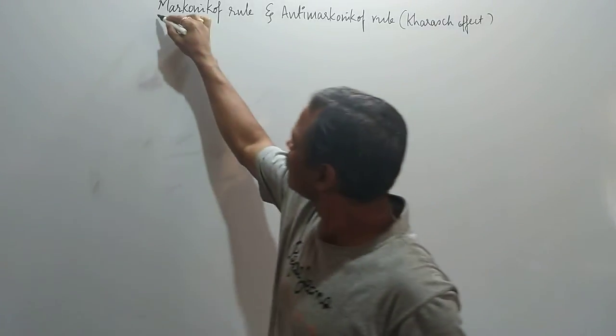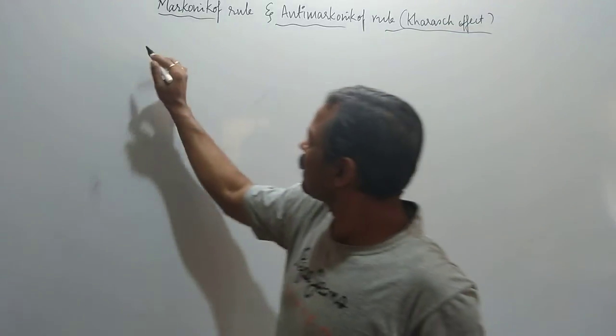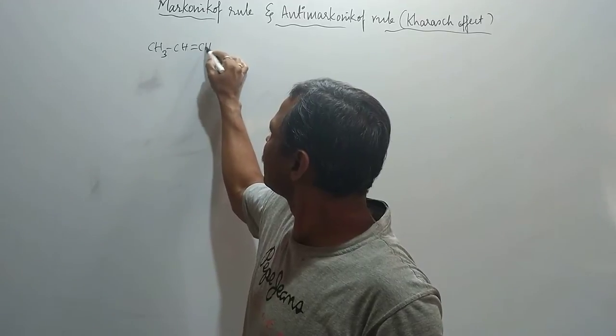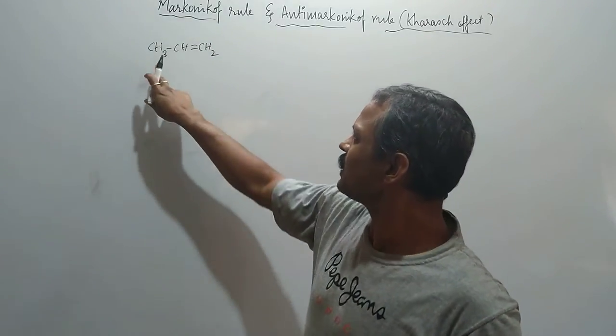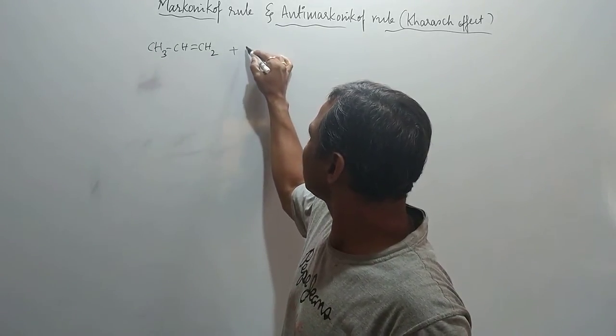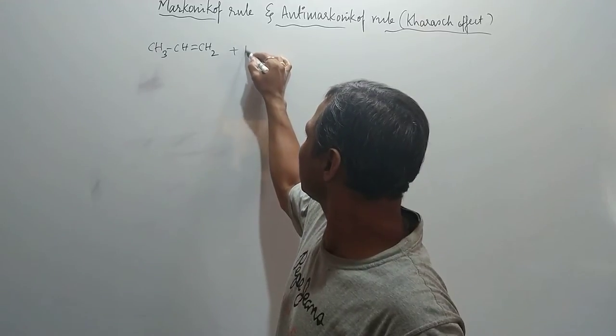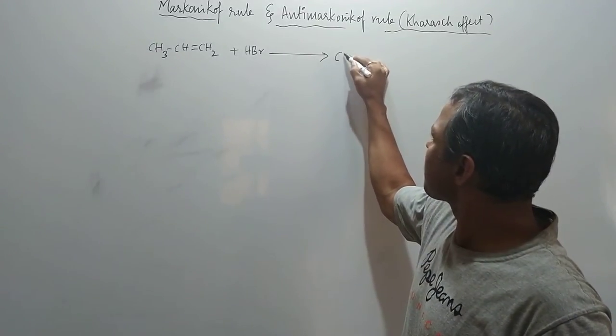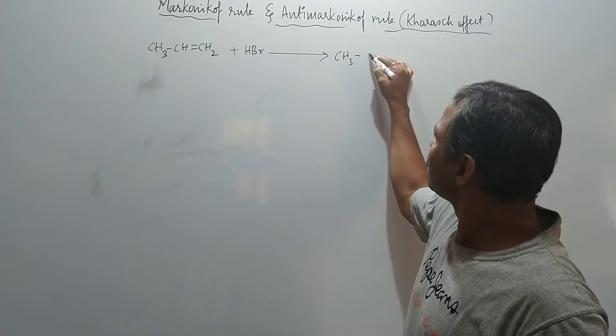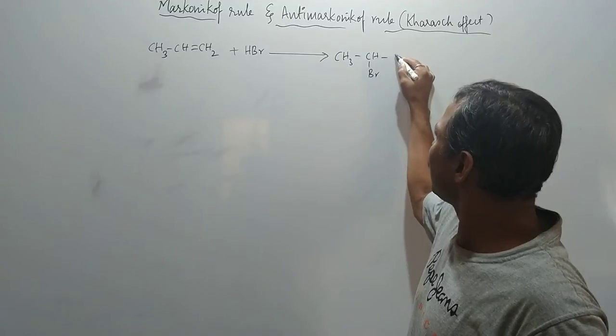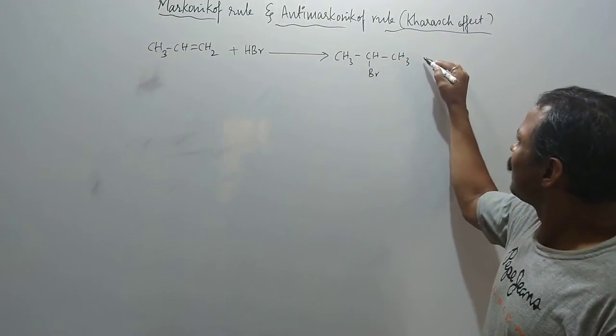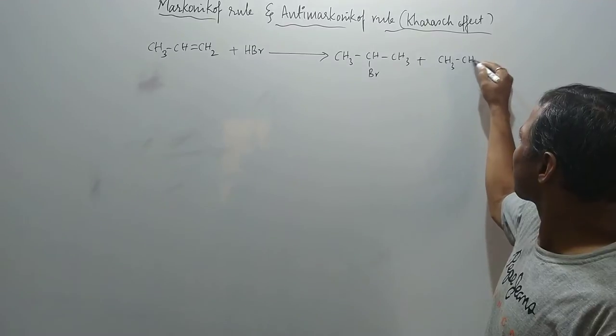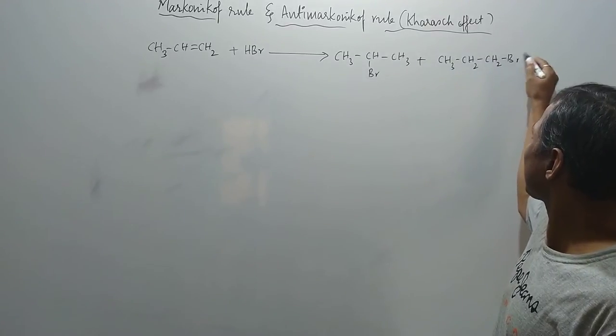So here, let me explain the first one. I take a simple molecule that is propene, an asymmetrical molecule. When it is made to react with any halo acids, especially hydrogen bromide, the product obtained here is CH3-CHBr-CH3. The other possible product is...